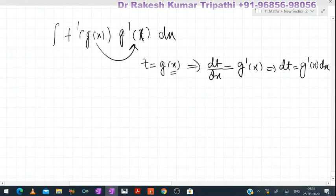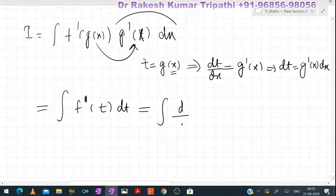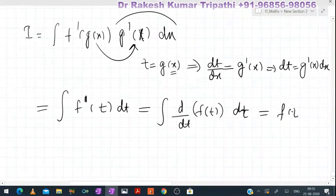Now, g'(x)dx in the integral — let the integral be I — g'(x)dx can be replaced by dt. So the integral becomes ∫f'(t)dt. Since the differentiation of f(t) is f'(t), and integration and differentiation are reverse to each other, the integration gives f(t) + C, which means f(g(x)) + C.